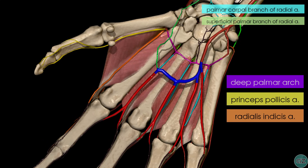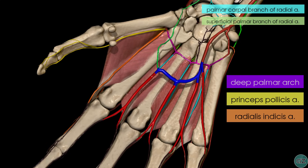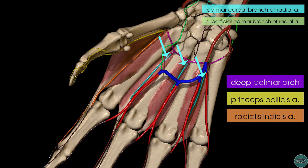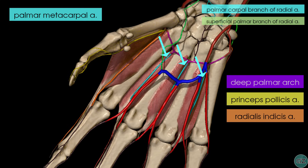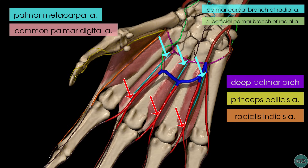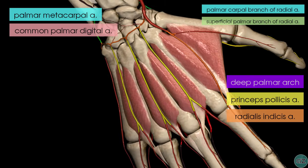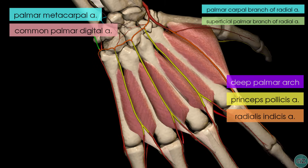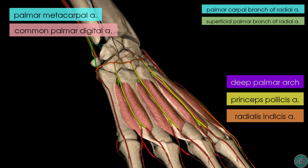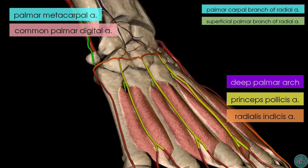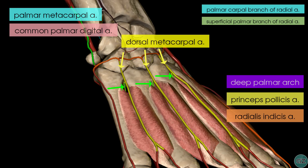Looking again at branches of the deep palmar arch: rotating the model, you can see branches in light blue coming off the deep palmar arch — these are the palmar metacarpal arteries, three of them, which anastomose with the common palmar digital arteries arising from the superficial palmar arch. Rotating dorsally, you can also see perforating branches which anastomose with the dorsal metacarpal arteries, as seen in this view.